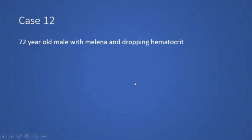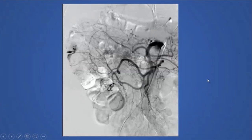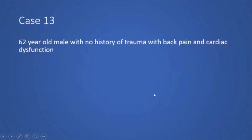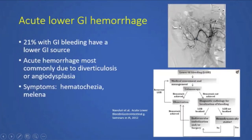The next patient is a 72-year-old male with melanoma and a dropping hematocrit, referred for mesenteric angiography. SMA injection demonstrates active extravasation from a tiny third-order branch of the ileocolic artery — an acute lower GI hemorrhage. Lower GI sources account for 21% of GI bleeding, with the most common causes being diverticulosis or angiodysplasia. This patient was treated with coil embolization using a microcatheter.